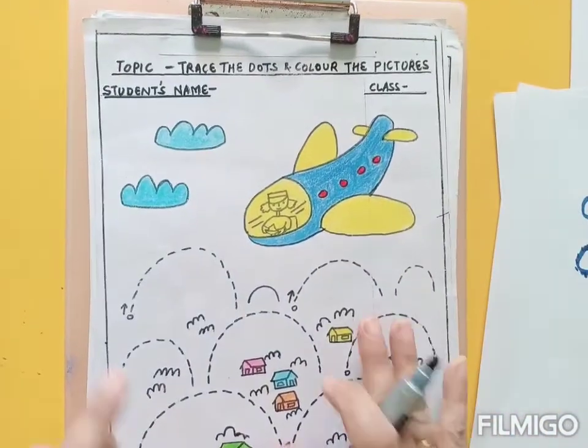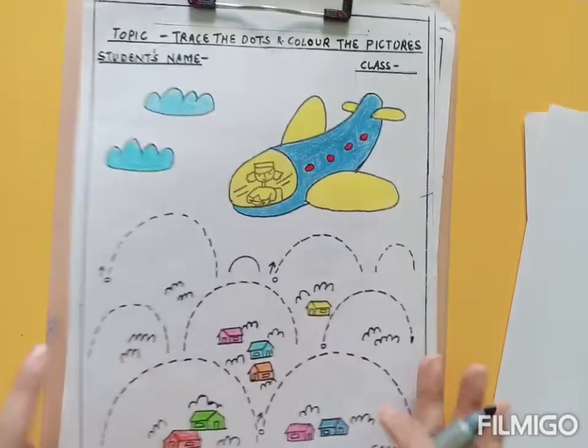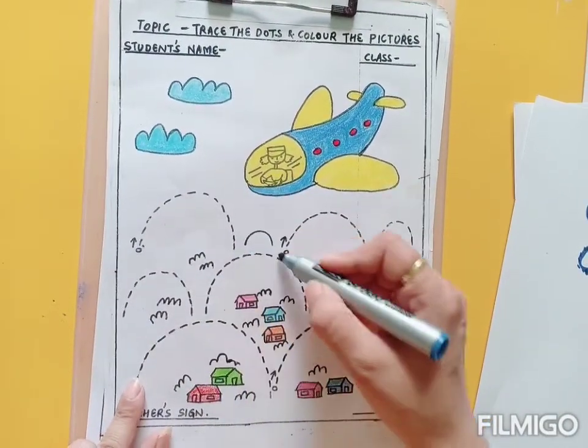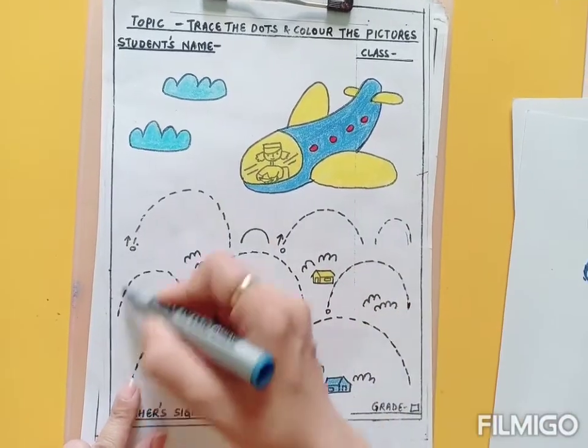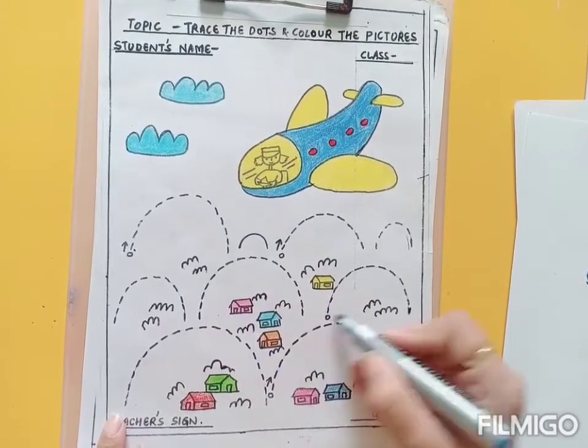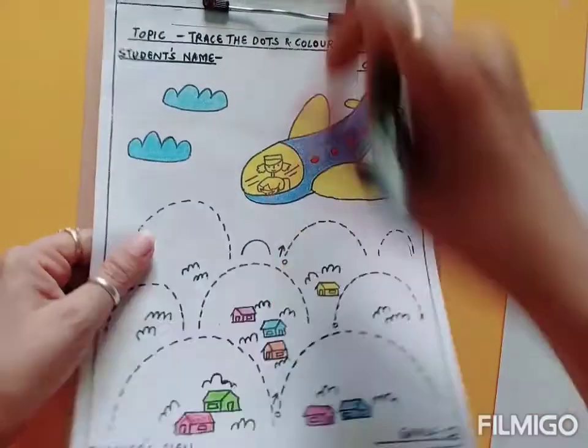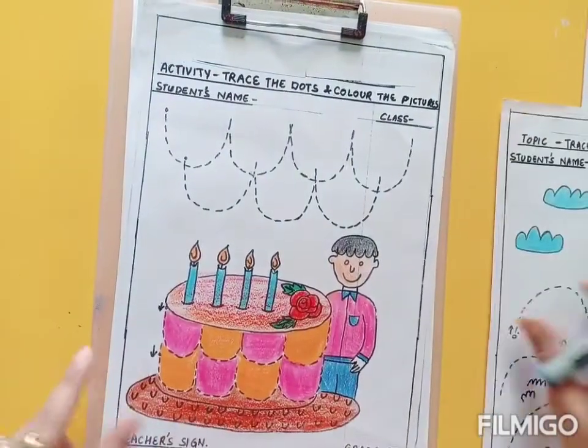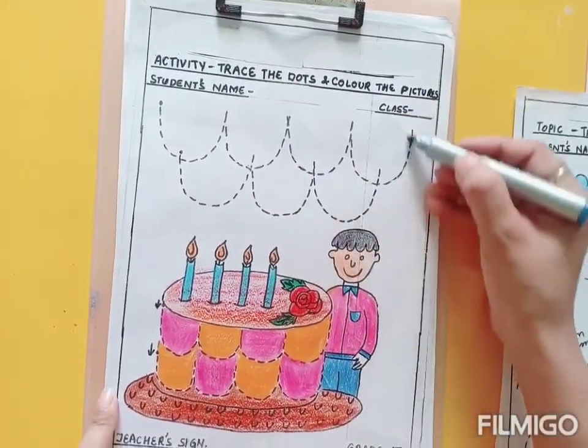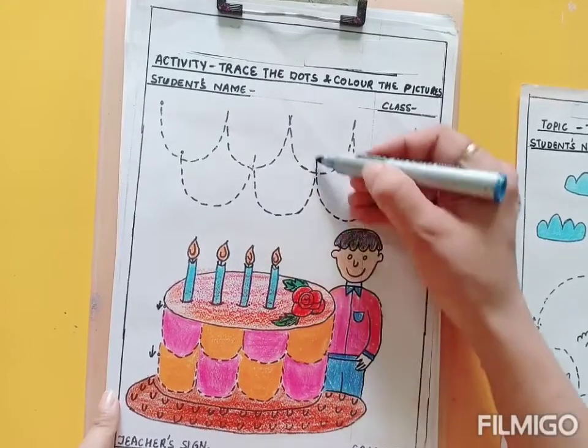Now here we will give the example of such worksheets to our child to do. Like you can see the downward curve, it is there. So ample of practice the child is going to do it like this, trace on the dots. And next worksheet is for the upward curves. Now for the upward curves, the child is going to